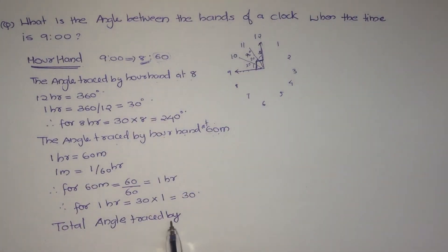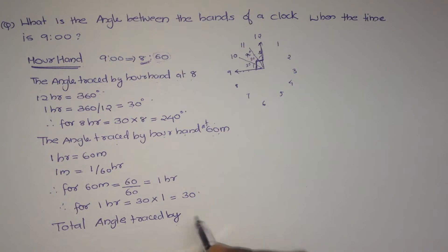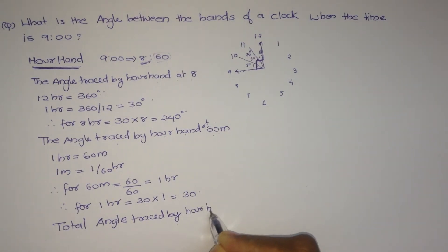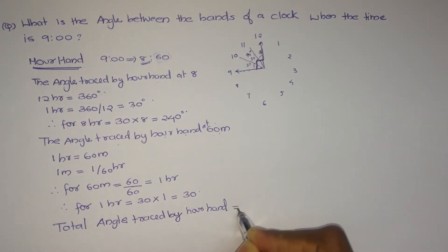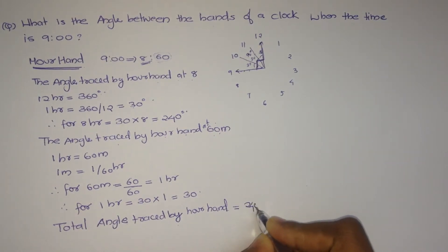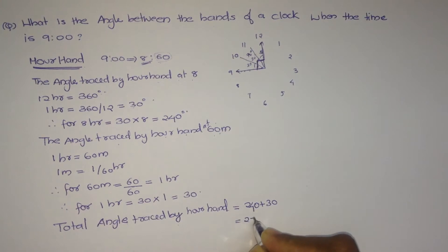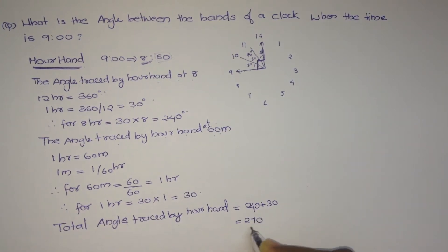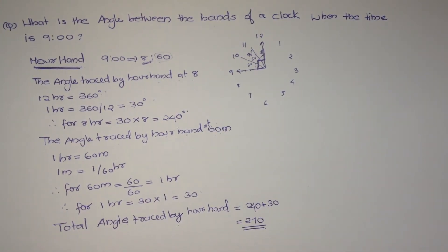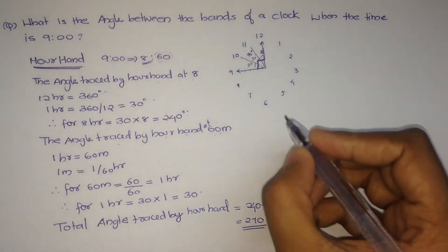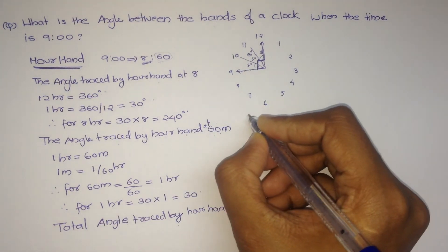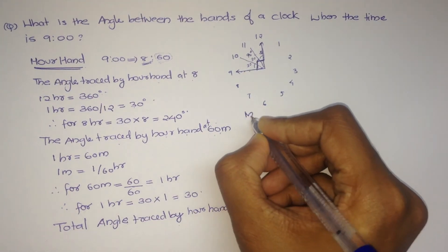Therefore, the total angle traced by the hour hand equals 240 plus 8, which is equal to 248 degrees. Now we have to find the angle traced by the minute hand.